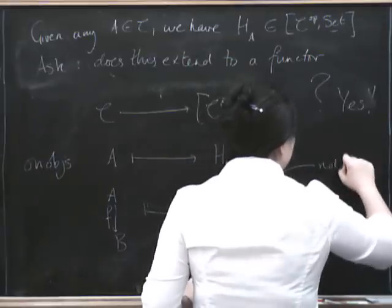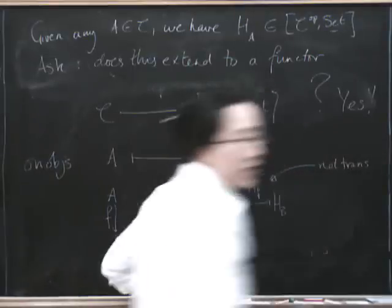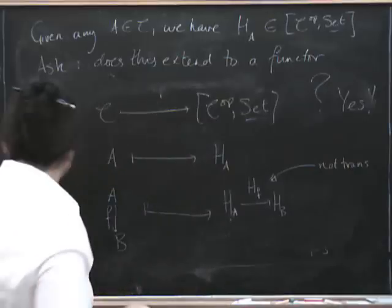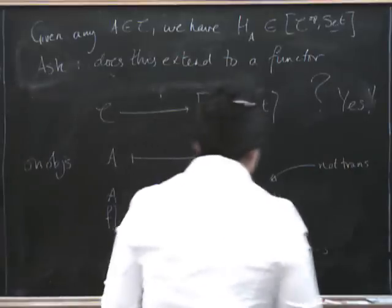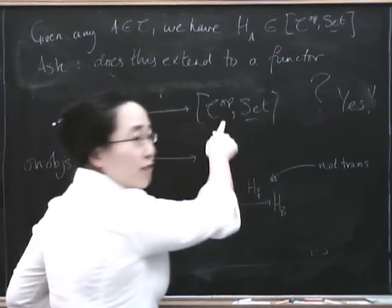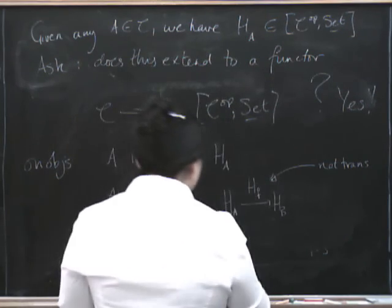This is going to be written H sub F. And it is a natural transformation. As a natural transformation, it has to have some components. So what are its components going to be? It needs a component at every object of C.